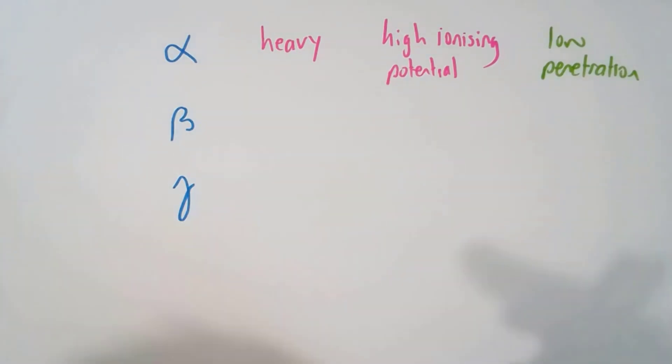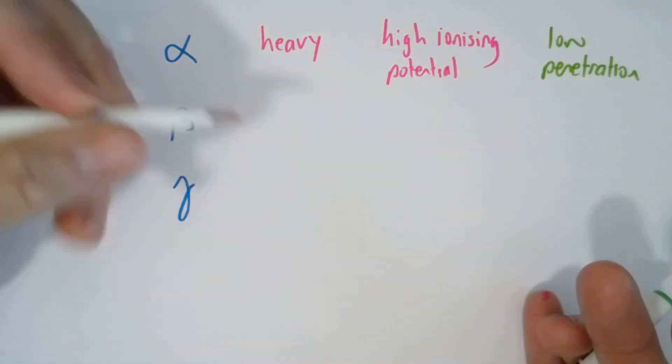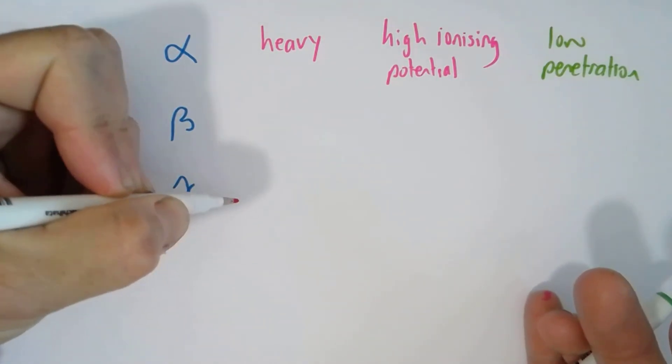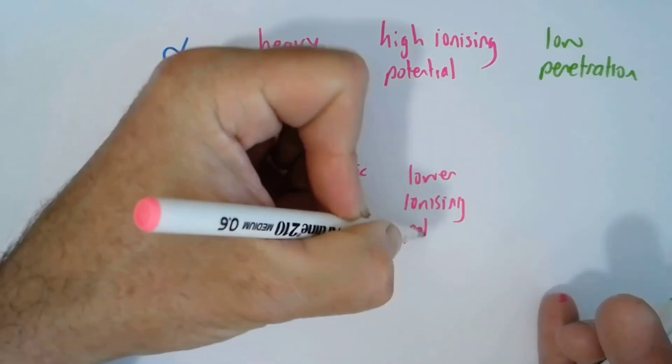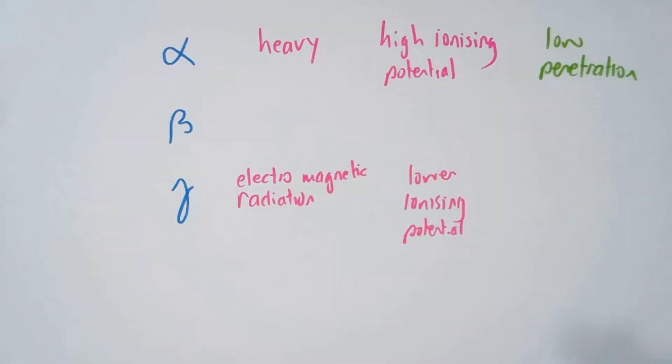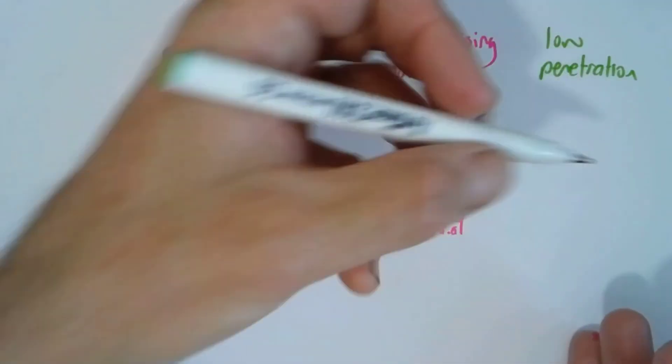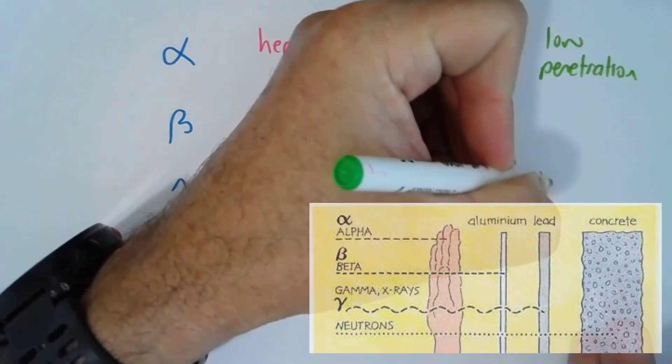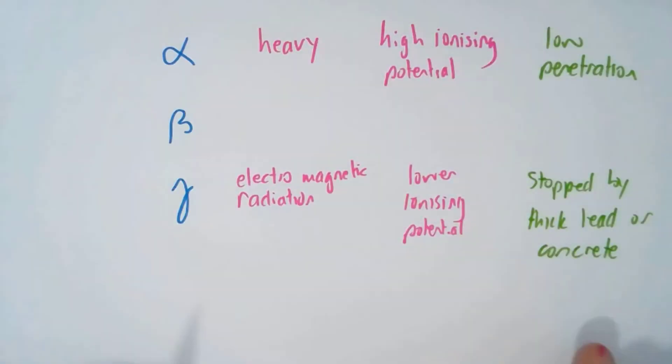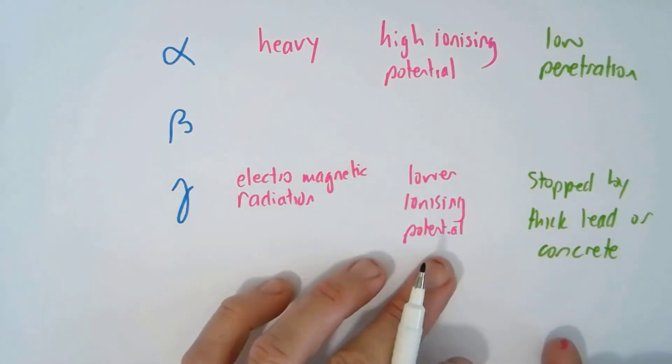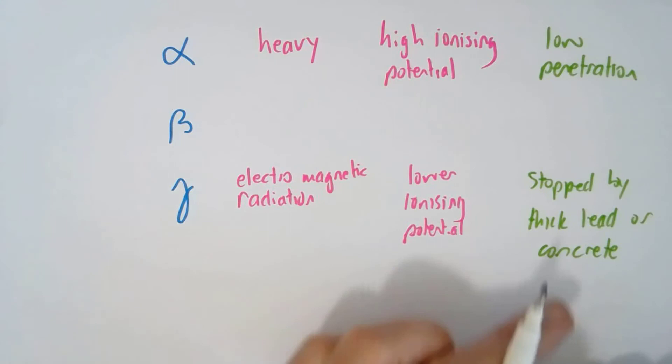Gamma is actually not particles at all, it's just radiation. It's got a lower ionising potential. However, it can actually penetrate through lead, so it's actually stopped by thick lead or concrete. So whilst gamma radiation doesn't have the same ionising potential, it can go straight into an organism without problems. So that is really quite dangerous.